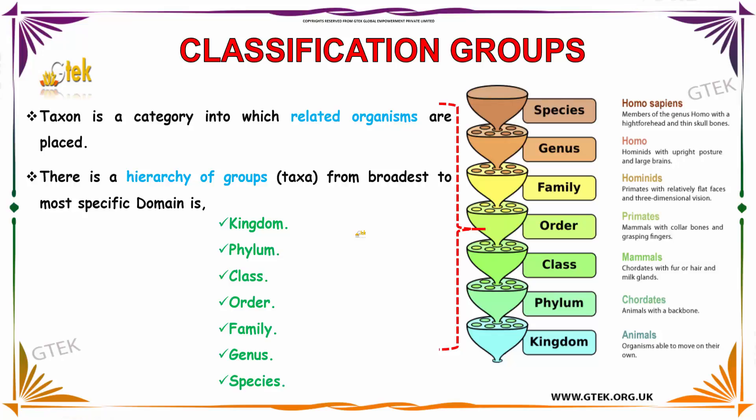Let us talk about classification groups. The taxon is a category into which related organisms are placed. There is a hierarchy of groups from broadest to most specific: domain, kingdom, phylum, class, order, family, genus, and species.